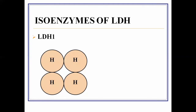LDH1 is a tetrameric enzyme made up of four polypeptide chains. In the case of LDH1, all four polypeptide chains are the H-type polypeptide chains, giving it the composition H4.